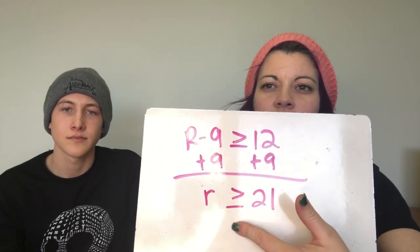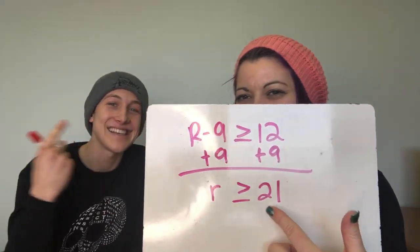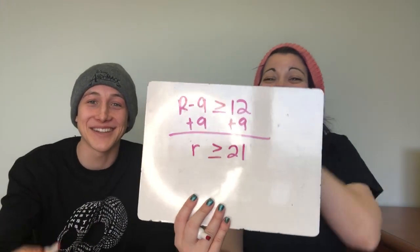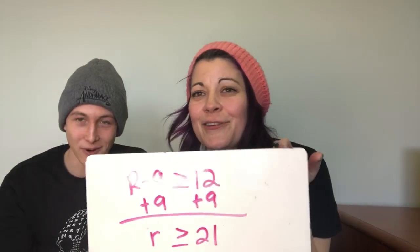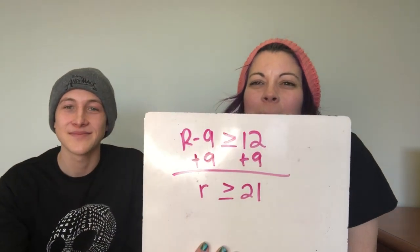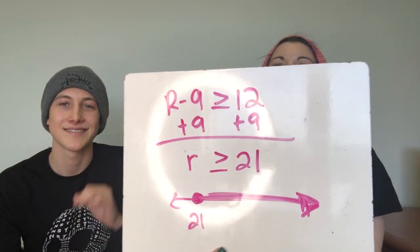Let's graph r is greater than or equal to 21. Do we use a closed or open circle? Closed circle, because you can use that value of 21. Since r is greater than 21, we shade to the right. We draw the number line, put a closed circle at 21, shade to the right, and it goes on forever.